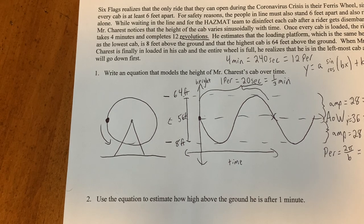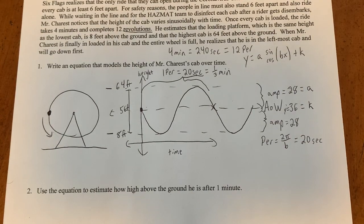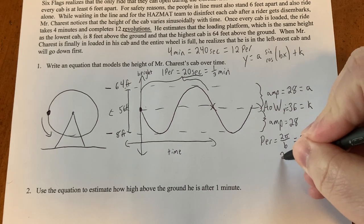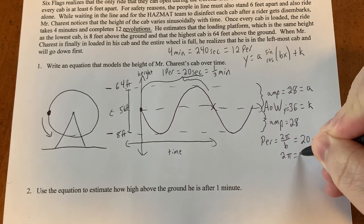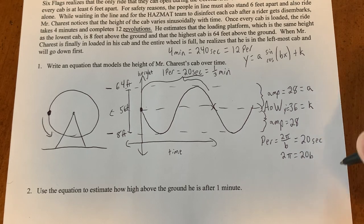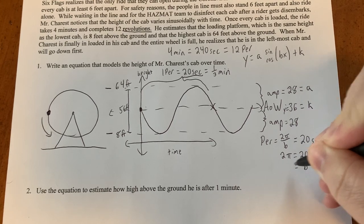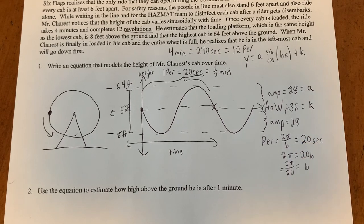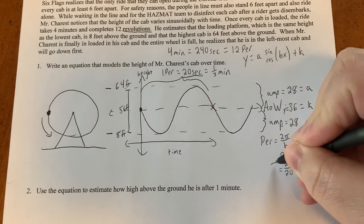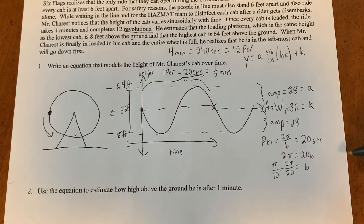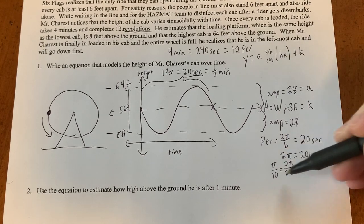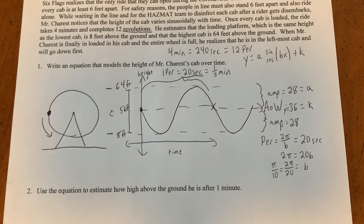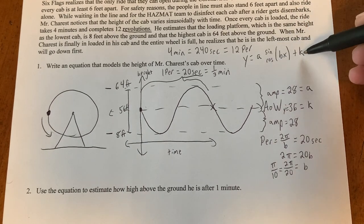So one period is 20 seconds. So 2π over b equals 20 seconds. Oops. A little off to the side. So multiply by b. 2π equals 20b. And b equals 2π over 20. Which simplifies to π over 10. So we have a. a is 28. We have b. b is π over 10. We have k. k is 36. So we have a, b, and k.